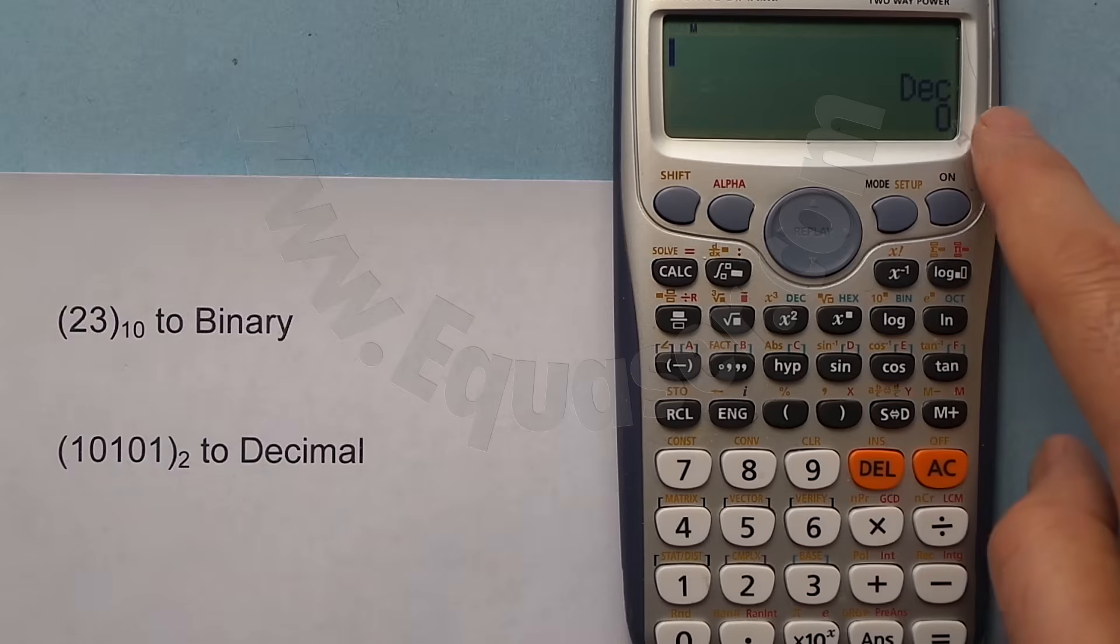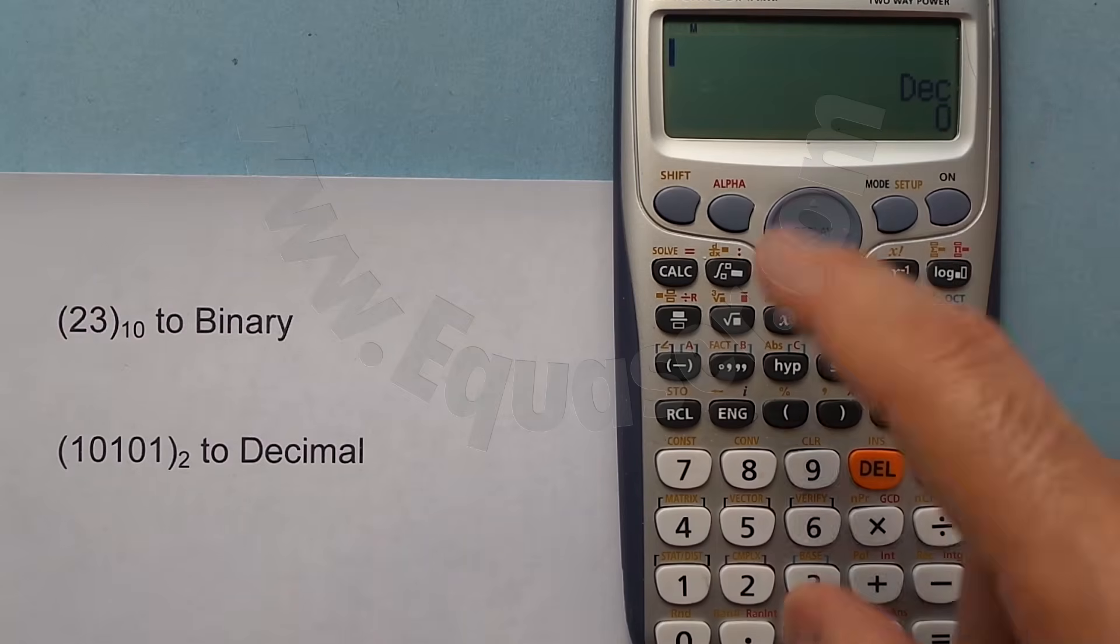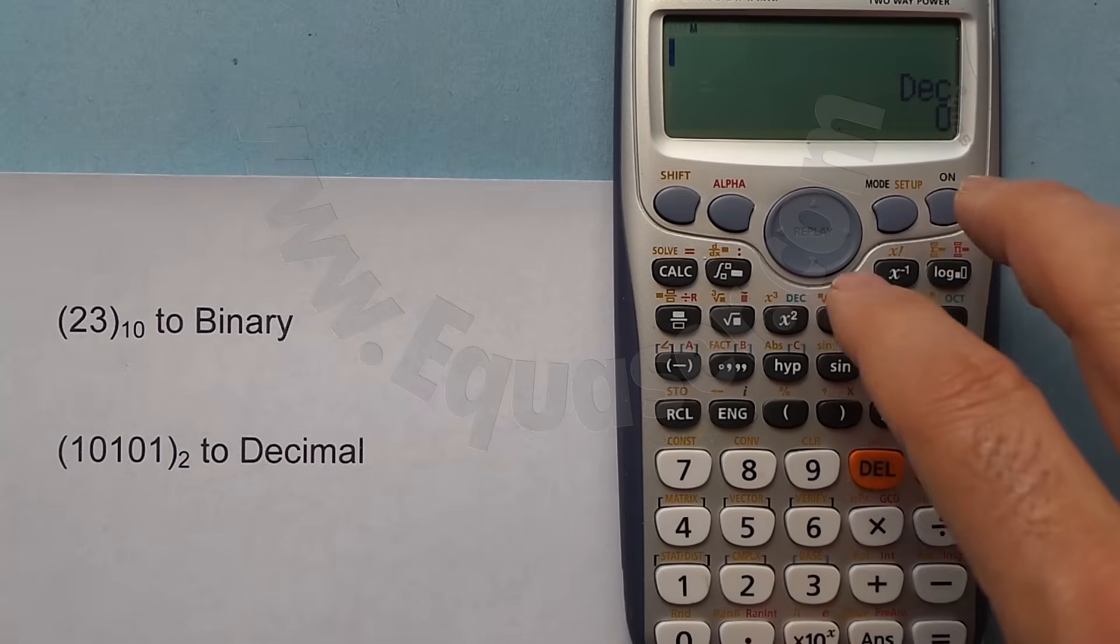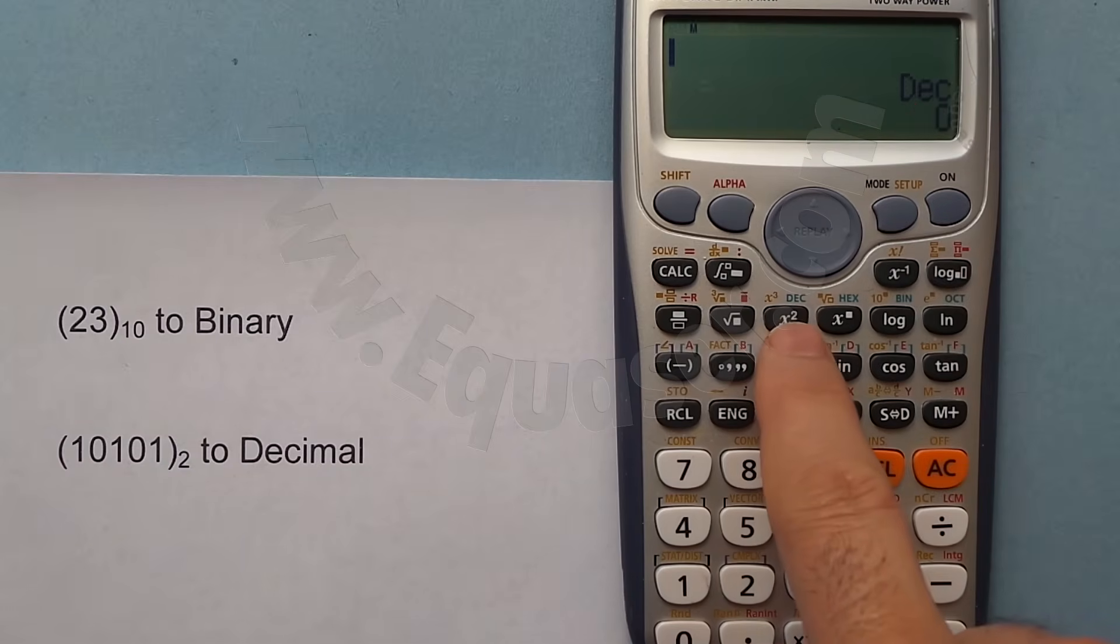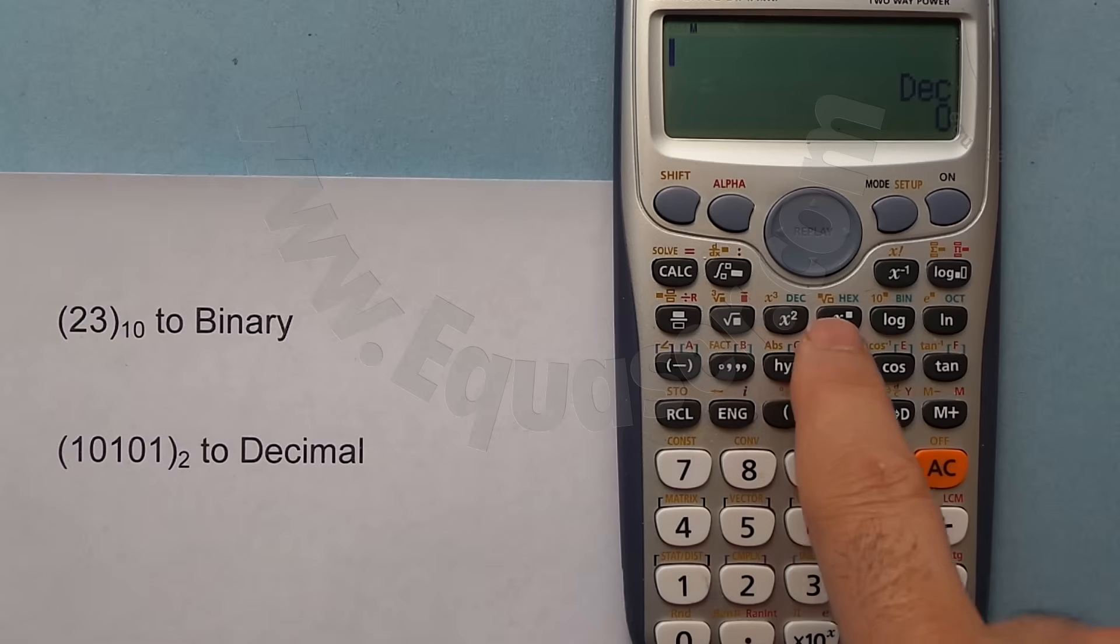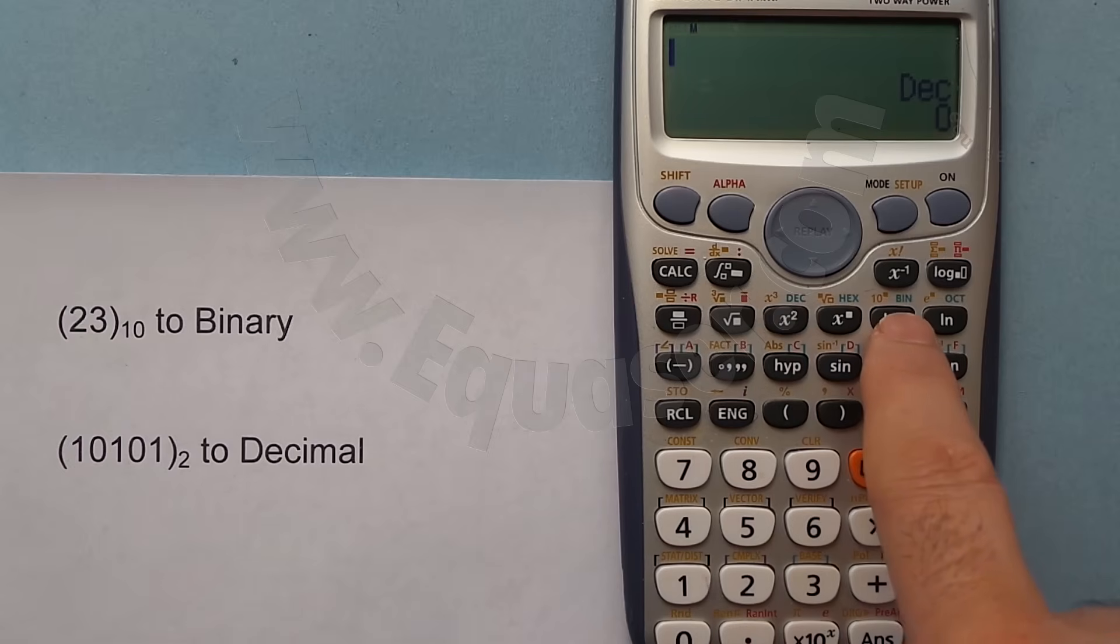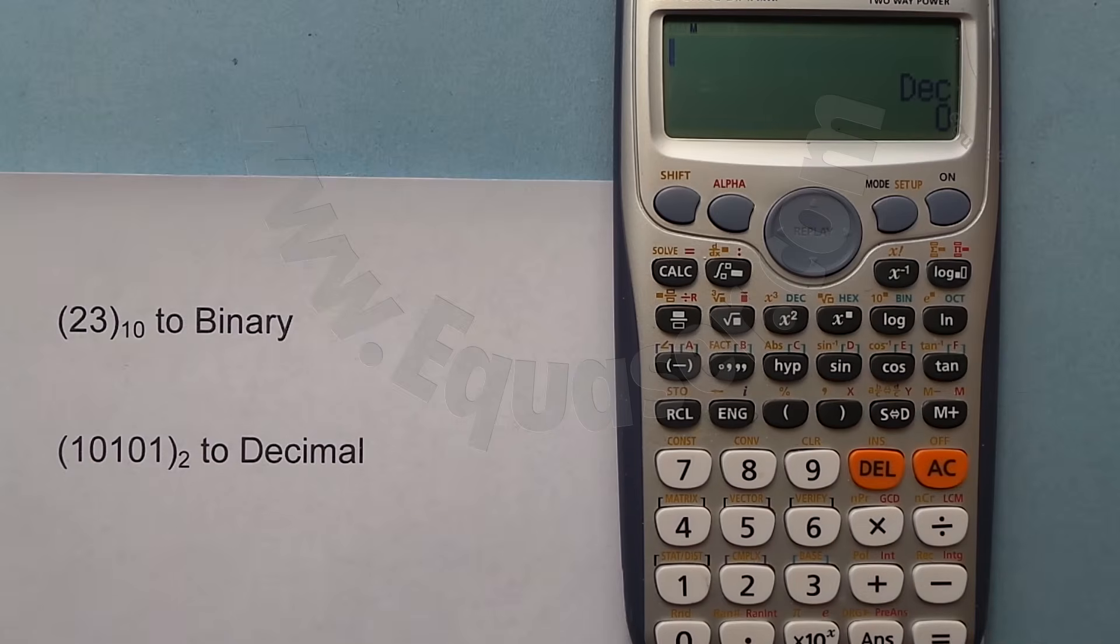Automatically by default it goes to decimal. To enter any data into the calculator, we select one of these green buttons: Dec (decimal), Hex, Bin (binary), and Oct (octal). These four buttons are used for converting values.